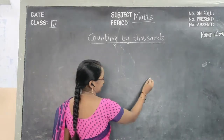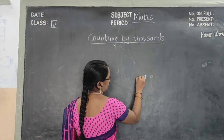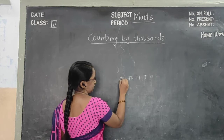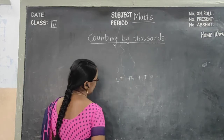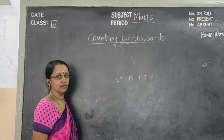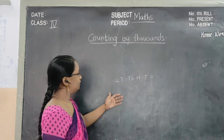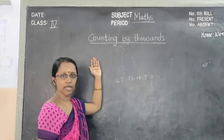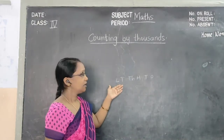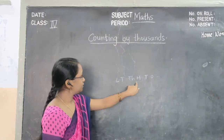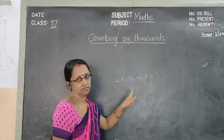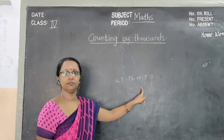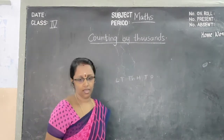We have learned that 1's, 10's, 100's, 1000's. So with this method only, what we are learning — with that only we have to see in the 1000's place. So here, we are saying 1000's place.